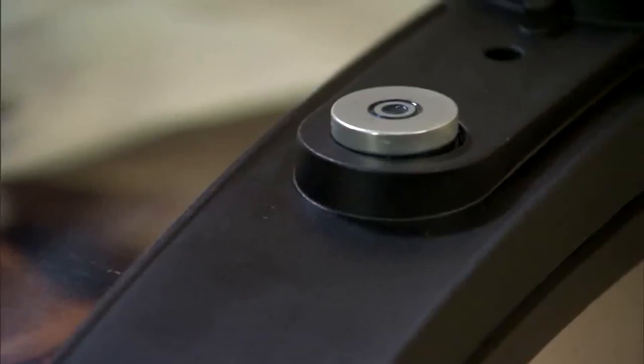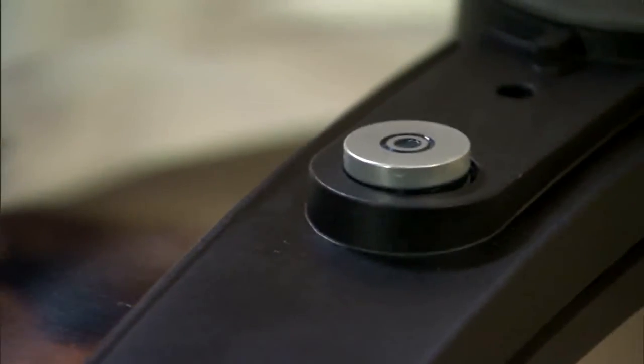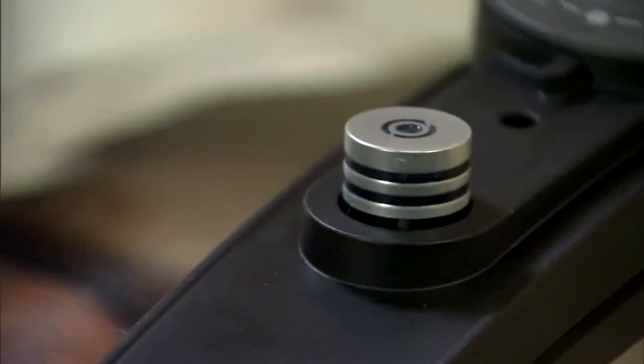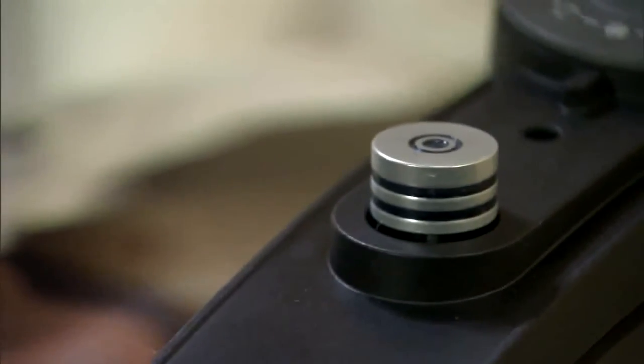When some pressure is in the unit, our indicator will raise one level. Then, when medium pressure is reached, our indicator will raise a second level. When full pressure is reached, high, the indicator will raise to a third level.